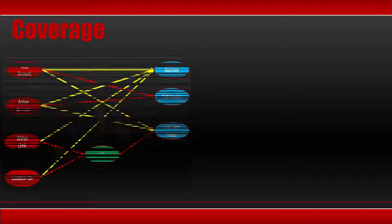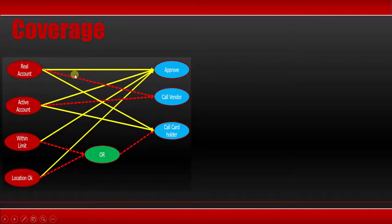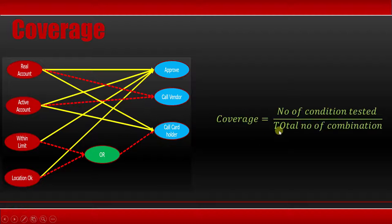So now let's move to the coverage. So if you have this type of cause-effect graph, then how you can see how much you have covered. So the formula for coverage is: number of conditions tested. So you have different conditions here. How many conditions you have tested and what are the total number of combinations. So if there is a decision table, it is very easy to find out because we have seen 9 combinations.